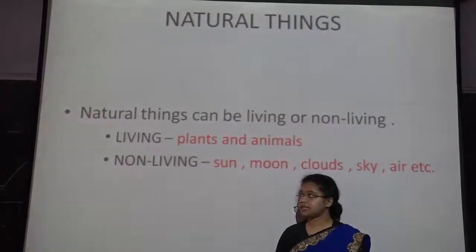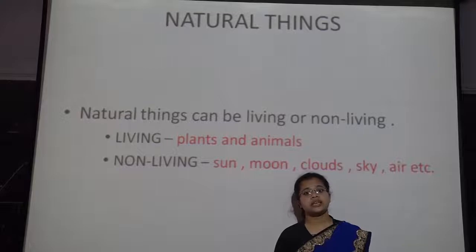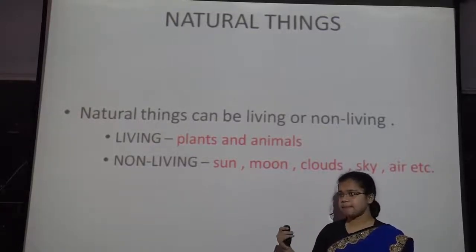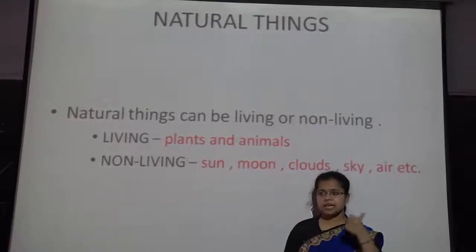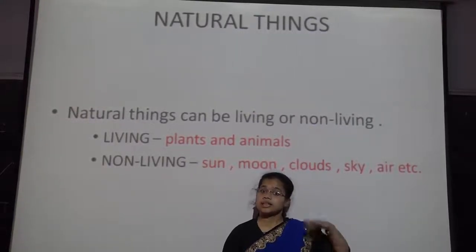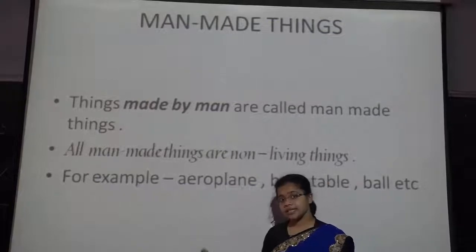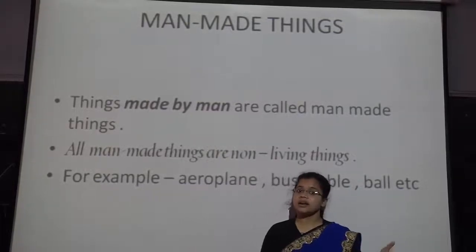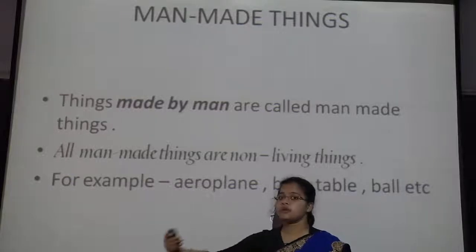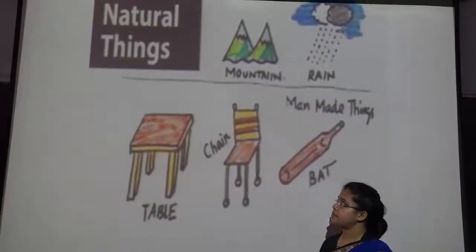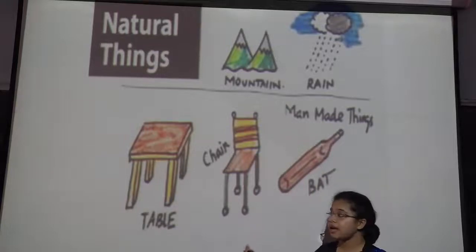Now let us move on to natural and man-made things. Natural things are the things that are made by God. It is not necessary that all natural things have life in them — humans and animals are created by God and have life in them, but the sun, moon, and clouds are also created by God but do not have life in them. You can see natural things like mountains and rain.